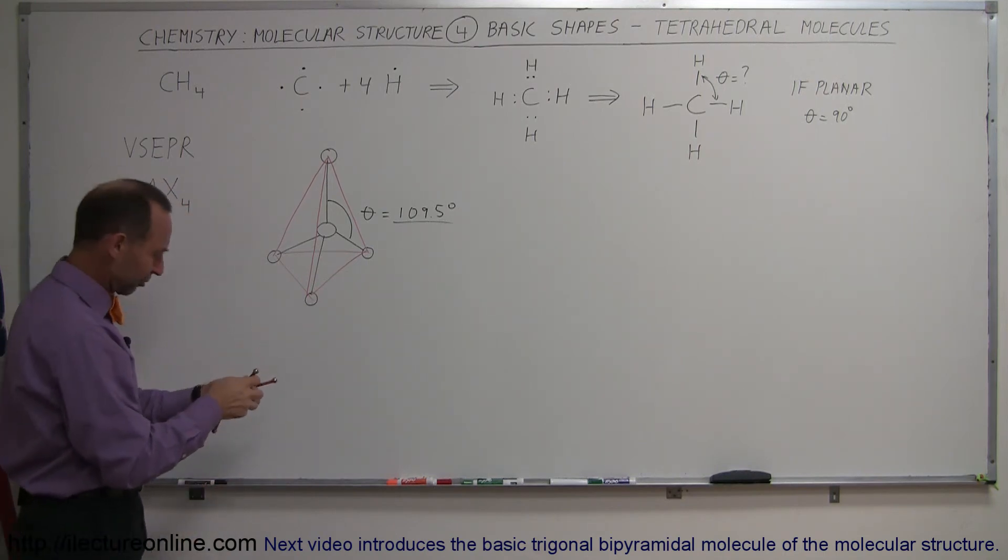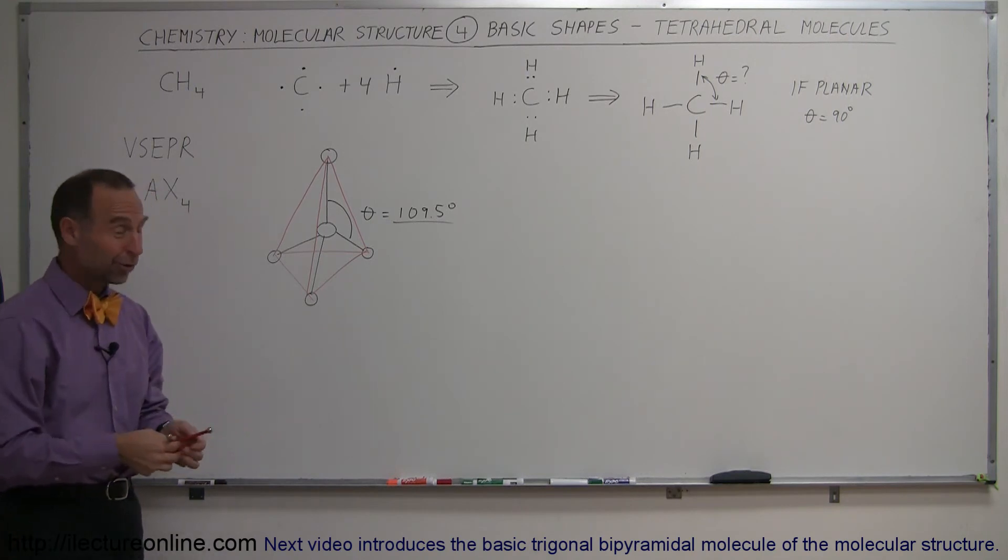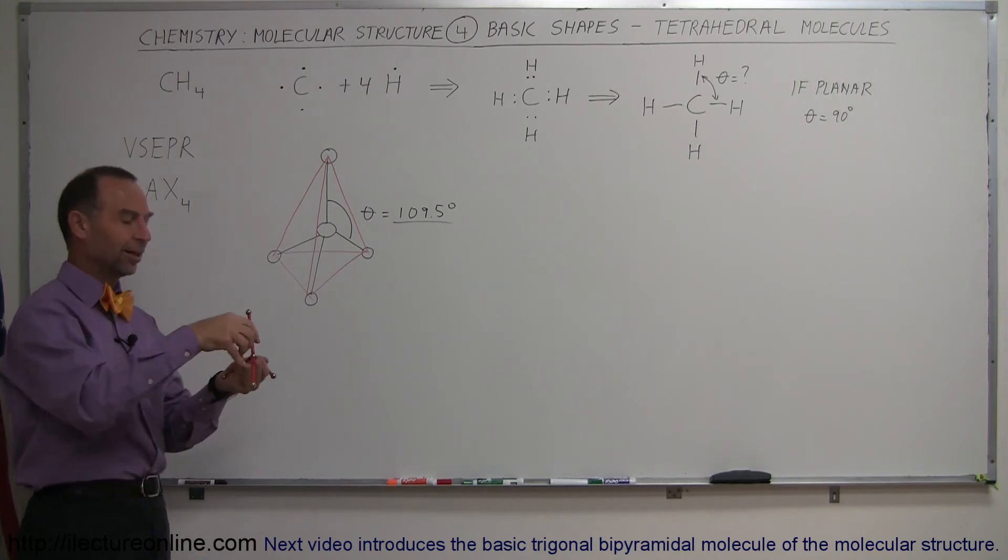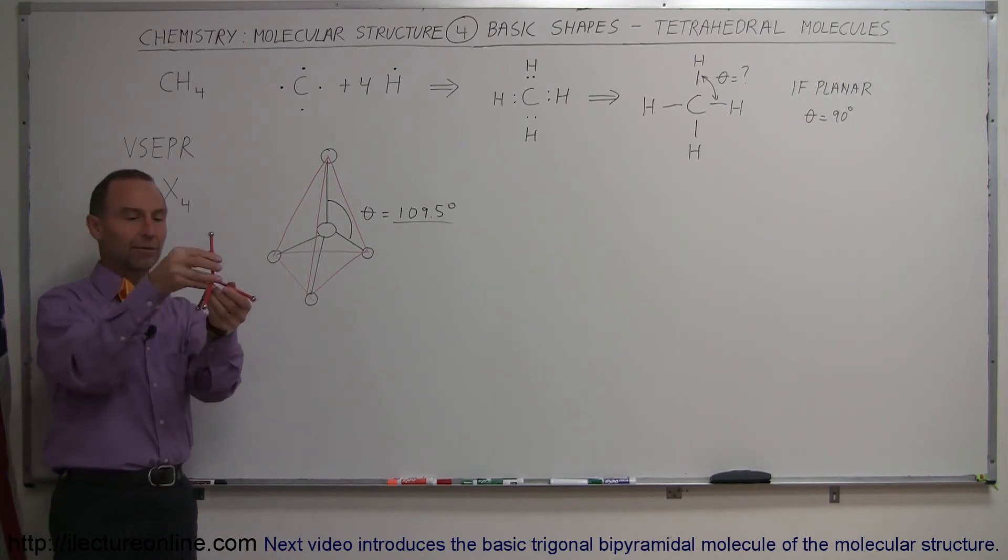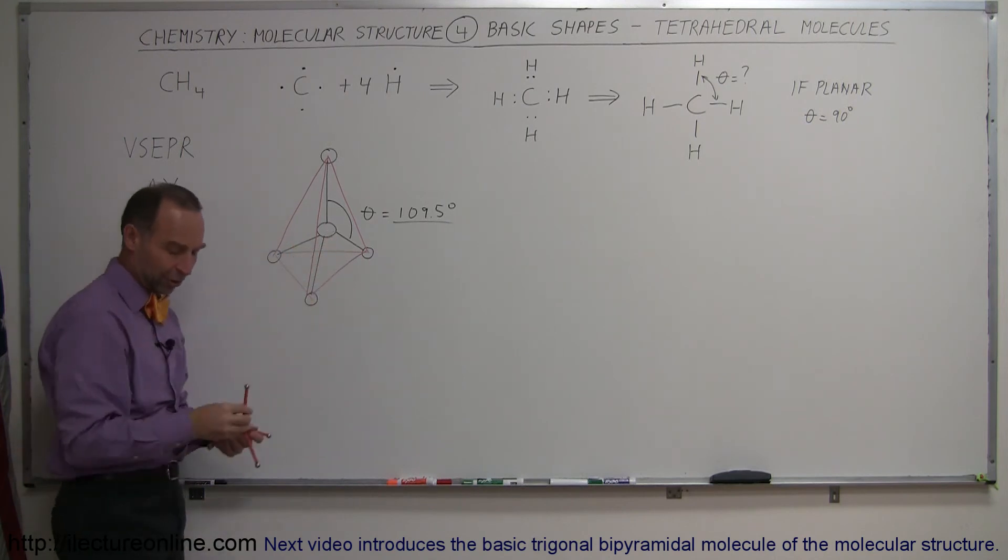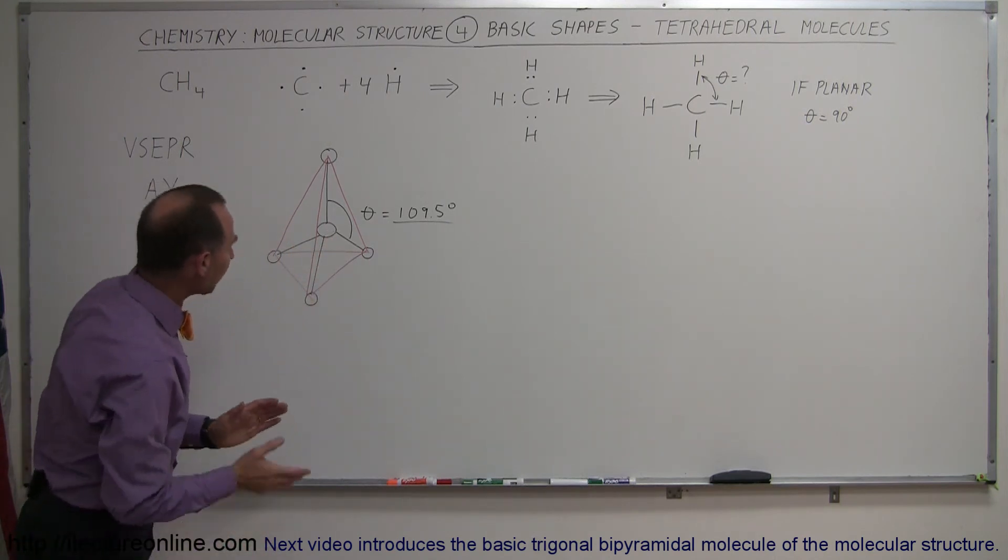Or electrons that are used in the bonds, I should say. They're not really bonded electrons, of course; they're electrons used in the bonding between carbon and the four hydrogens. So that's why it turns out that from electrical repulsive forces alone, it will form itself into this kind of molecule.